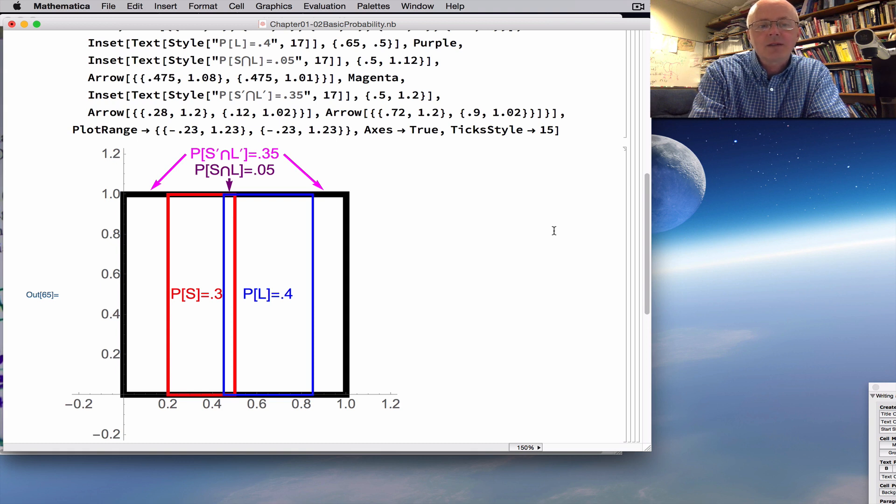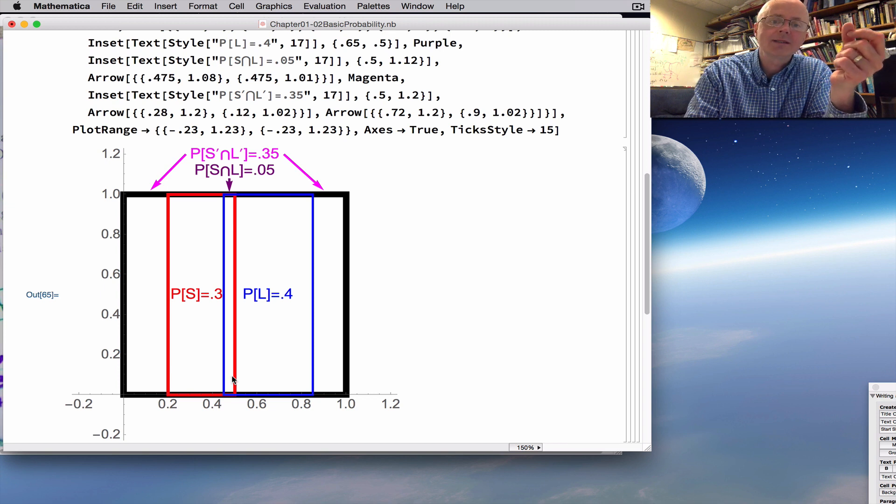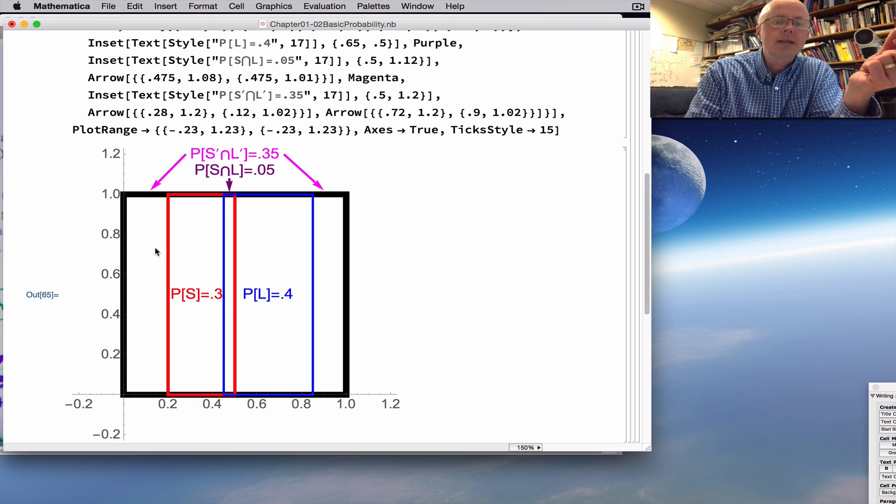What I emphasize here is a way to think about this conceptually. I made the Venn diagram again. The black box is the blue box that I drew by hand. It represents the gymnasium, all the people who visited the doctor's office. I didn't use circles this time for S and L, instead using rectangles, and I purposely made these rectangles have areas equal to the probabilities. For example, this red rectangle has a height of 1 and a base going from 0.2 to 0.5.